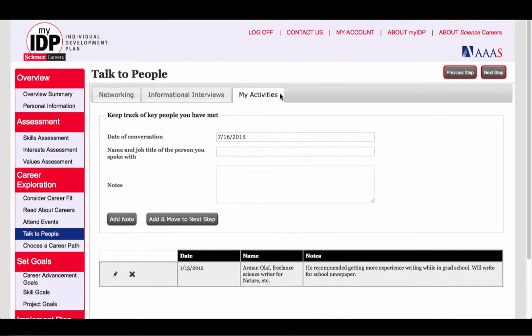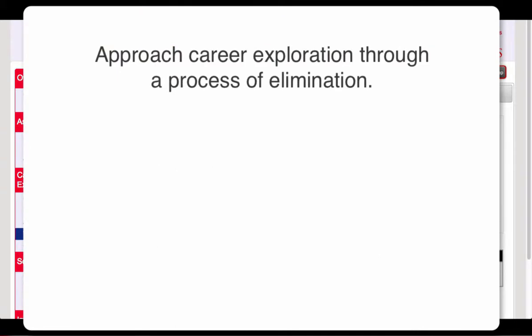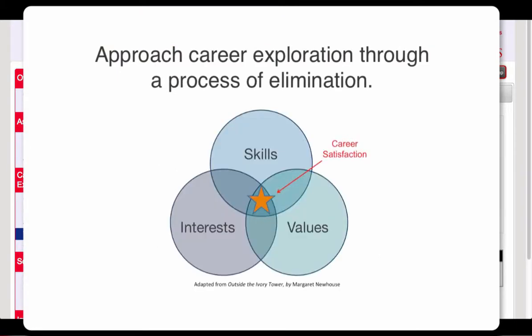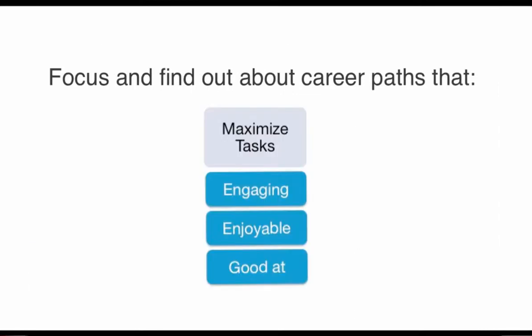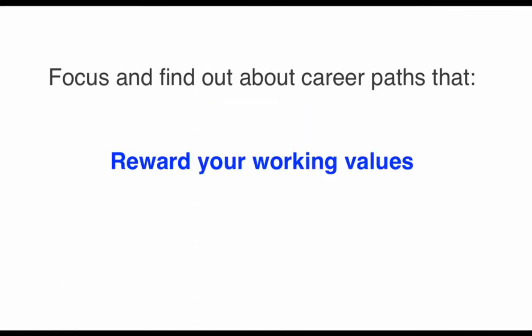So you've explored a lot. With so many career options, how do you go from exploration to choosing a career path? You could approach the choice through a systematic process of elimination. Use knowledge of your skills, interests, and values to eliminate careers that involve tasks you find boring and unpleasant. Instead, focus on careers that involve tasks you find engaging and enjoyable and that you're good at. Also, choose careers that provide the rewards or outcomes you most want.